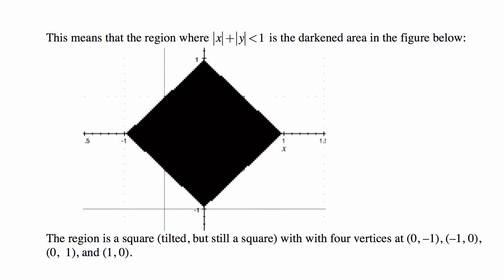That region is the darkened area in the figure. Technically the density is not defined at the point where the absolute value of X plus the absolute value of Y equals zero — that's only the single point (0, 0) — but one point of the density for a continuous distribution doesn't matter for any calculations. So we're comfortable saying the density is constant on this darkened region. And what is that region? It's a square — tilted, but a square.